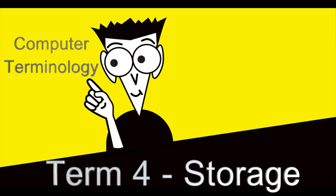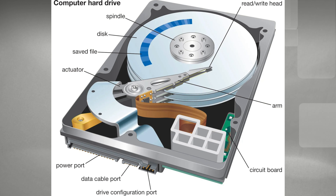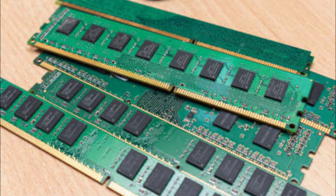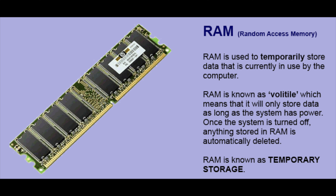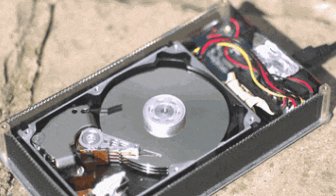Welcome to another computer terminology video. Today we will be covering term 4, storage. Computer storage is a mechanism that enables a computer to retain or store data as permanent storage. This differs from memory, as memory is inherently temporary and allows data to be stored as a gateway to put it over to storage for more long-term use. As discussed in the previous video, RAM is a function that allows a computer to access and process short-term tasks such as running computer software.